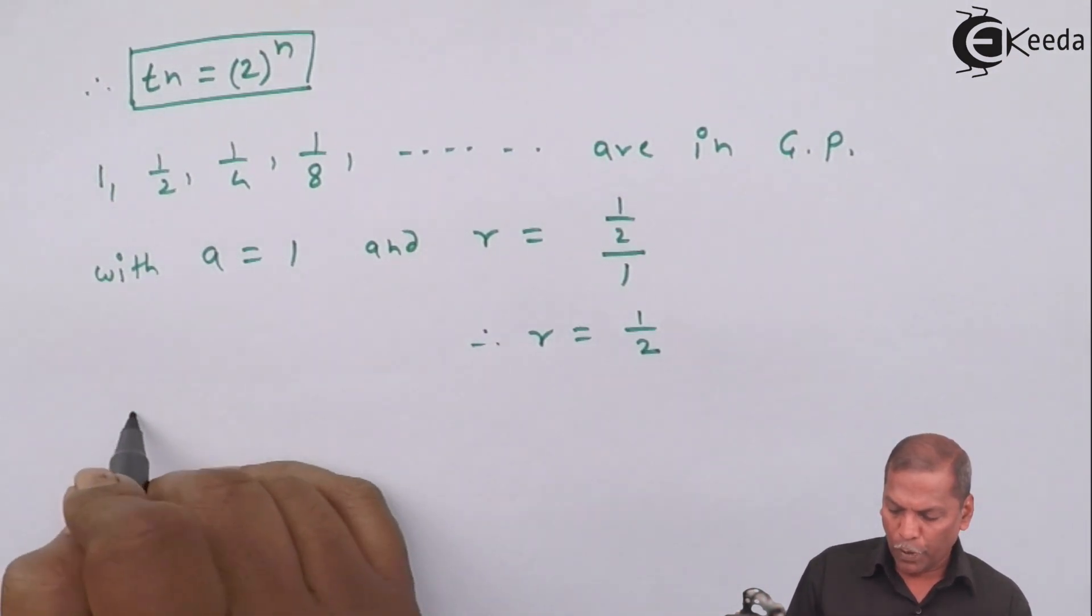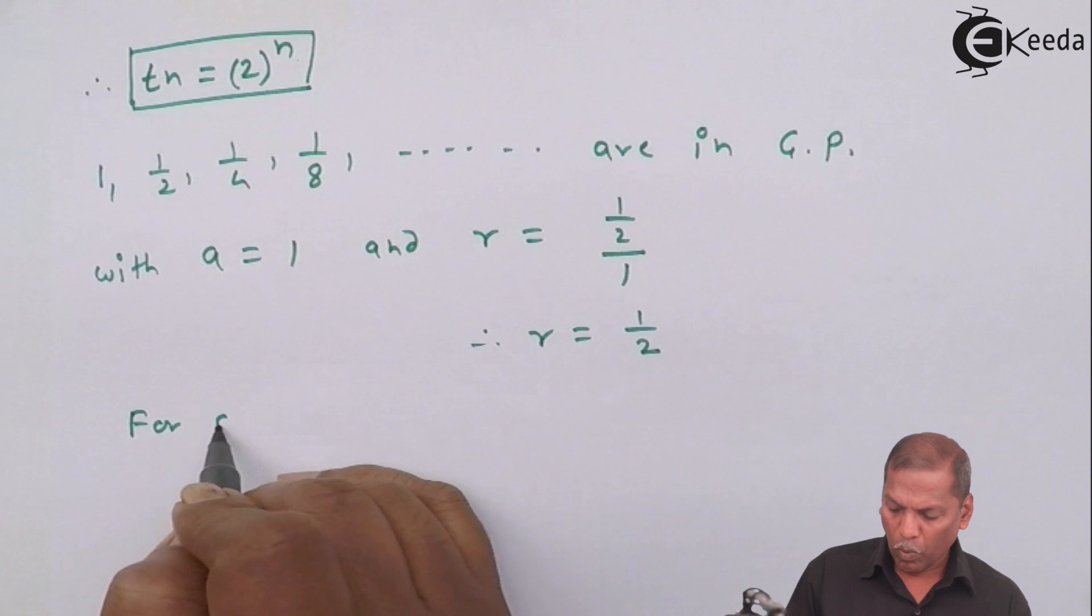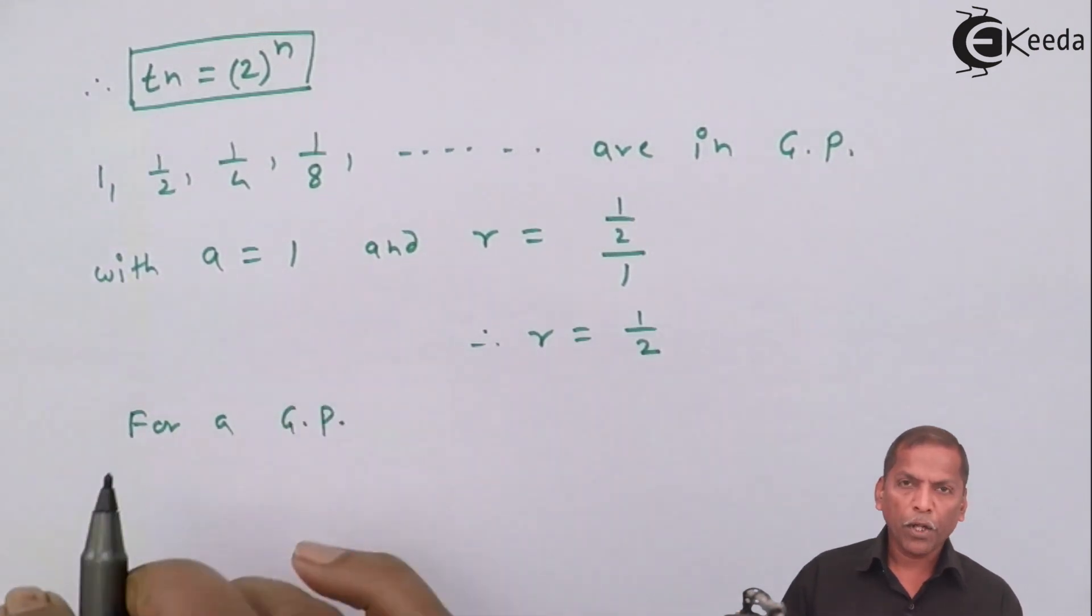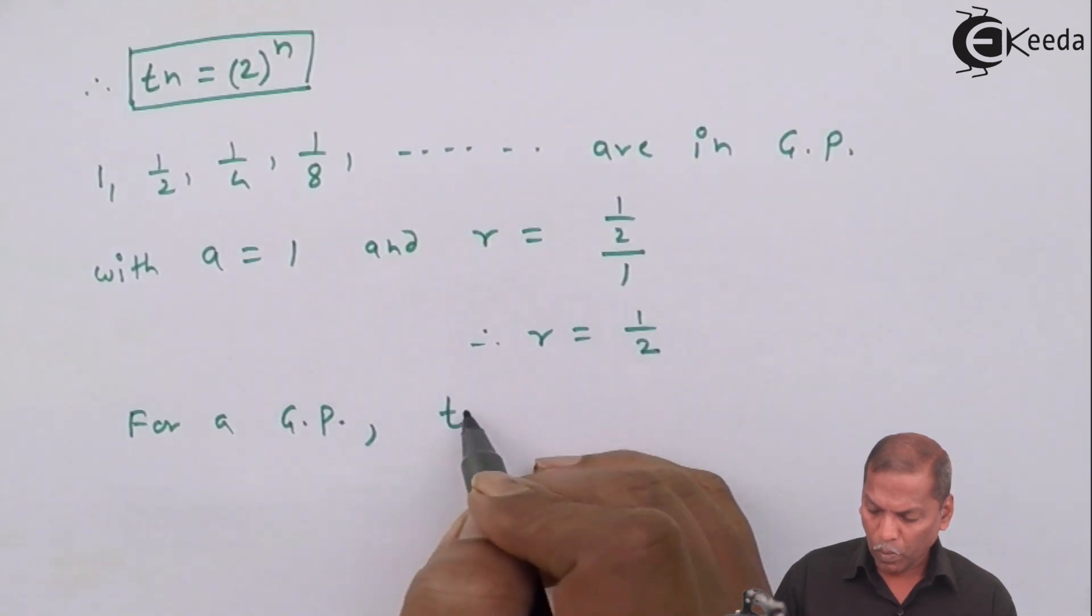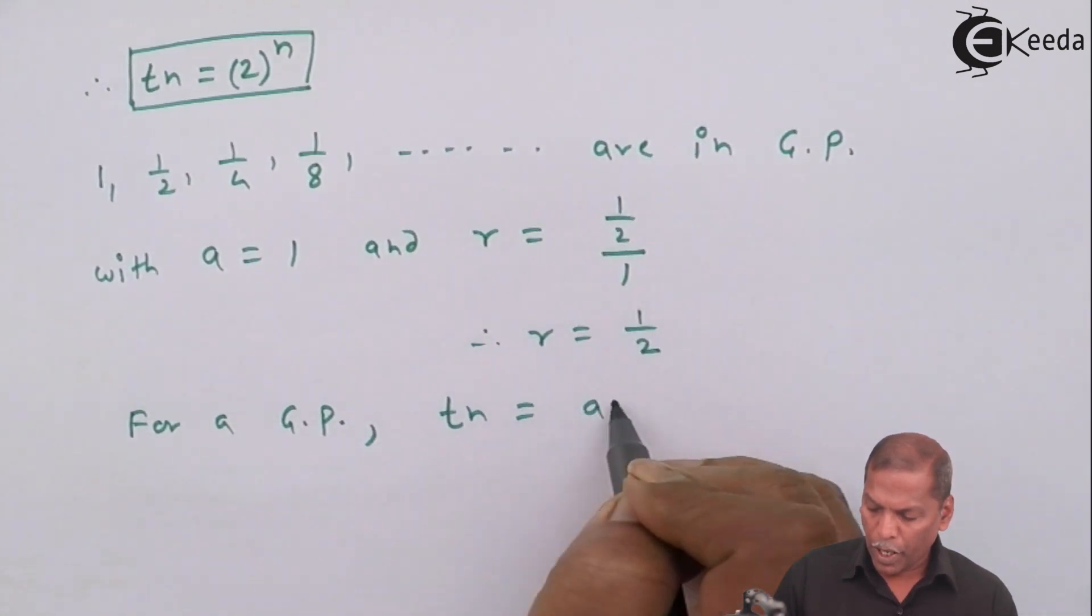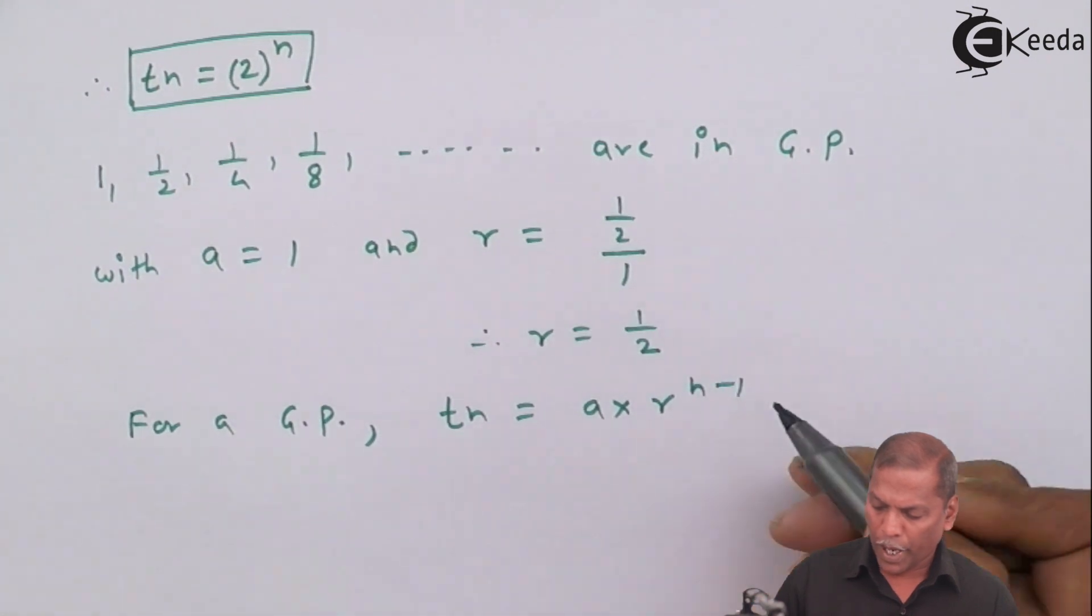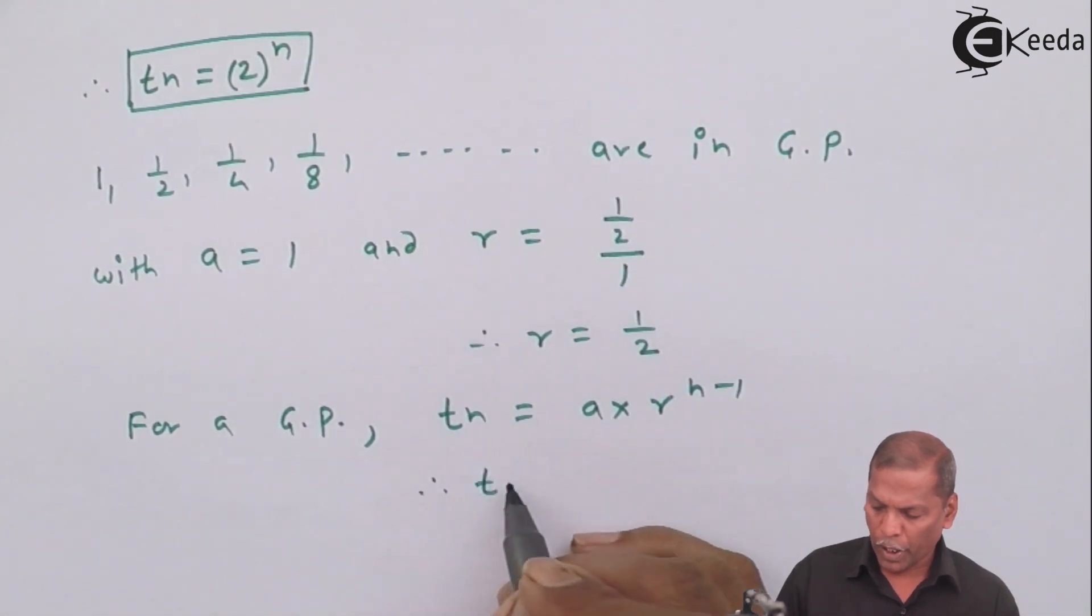Now for a GP, nth term Tn is given by a into r raise n minus 1. Therefore,